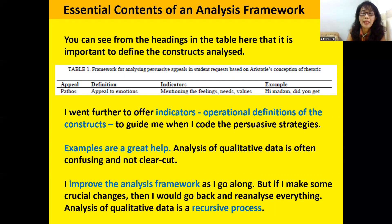Examples are a great help because analysis of qualitative data is not clear-cut — it is often very confusing. This is the process of qualitative research: I improved my analysis framework as I went along. You might ask, what happens to the early ones that you already analyzed? Well, I went back and reanalyzed them until the analysis became stable. Normally the analysis will only become stable after 5 to 10 texts. We have to keep going back to make sure we have analyzed things in the same way, and after that it will be consistent and reliable.